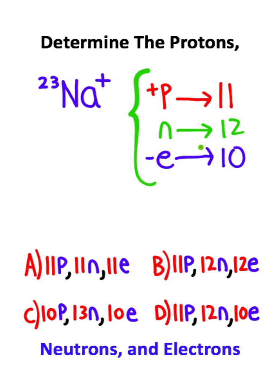So we have eleven protons, twelve neutrons, and ten electrons, and if you look at the four options down below, this matches with option D. That is how you solve the problem.